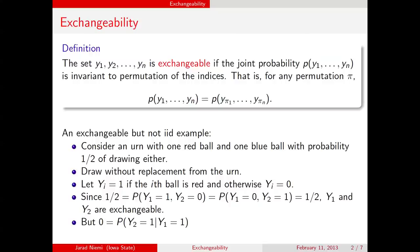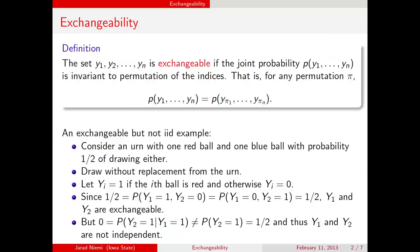In contrast, if we drew a red ball and ask what's the probability that the second draw is also red — well, since the red ball is already gone, that probability is 0, and that's not equal to the marginal probability of drawing a red ball, which is one half. Because this statement is not true, y1 and y2 are not independent. So this was an example of an exchangeable set of random variables that is not independently and identically distributed.